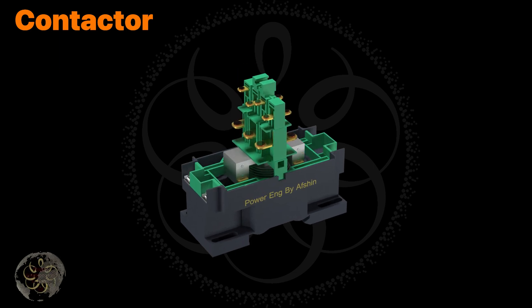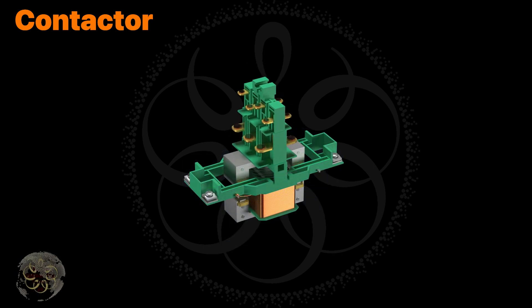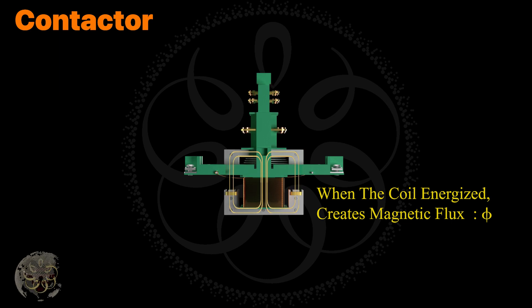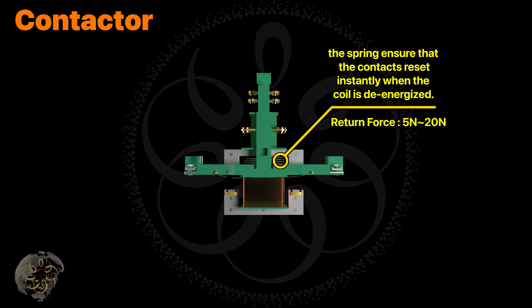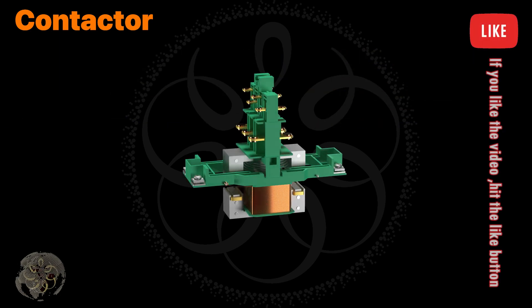When current flows through the coil, it creates a magnetic field. The magnetic field attracts the armature towards the core. The movement of the armature mechanically operates the contacts, either closing or opening them depending on the contactor's design.